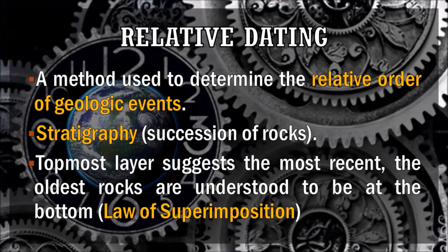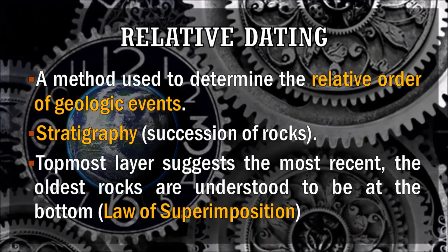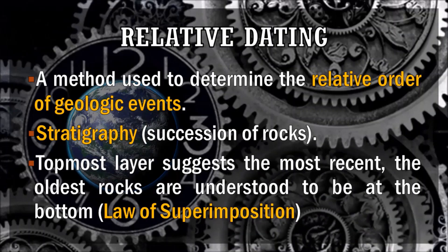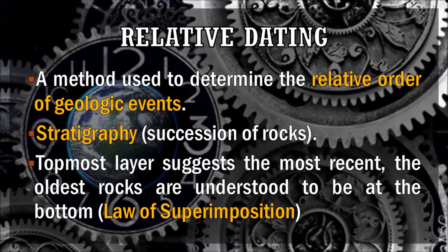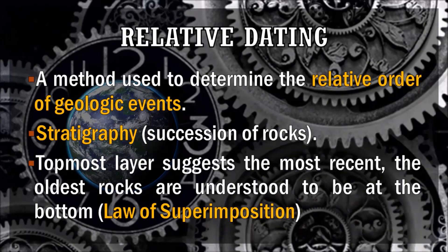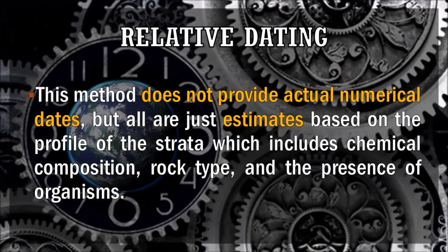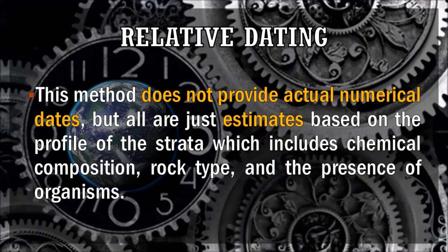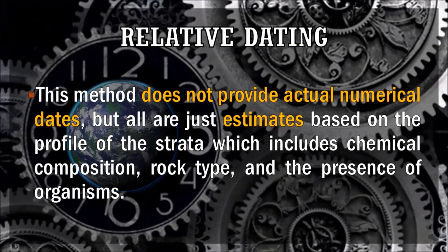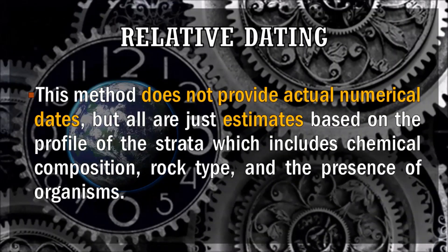The first type of dating method is relative dating — a method used to determine the relative order of geologic events. This is done through stratigraphy, or the succession of rocks, where the order of rock formations correlates to geologic time. The topmost layer is the most recent; the oldest rocks are understood to be at the bottom — that is the law of superimposition. Relative dating does not provide actual numerical dates for the rocks, but only estimates based on the profile of the strata, including chemical composition, rock type, and the presence of fossils.